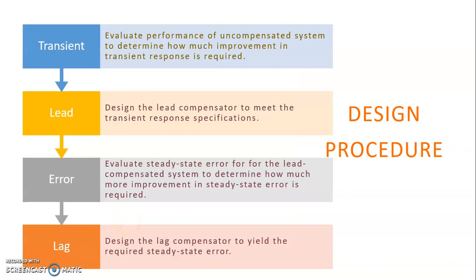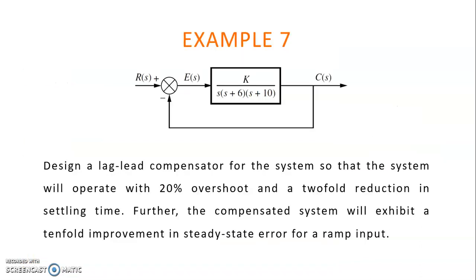The design procedure is based on these steps. The first step is to evaluate the performance of the uncompensated system to determine how much improvement in transient response is required. Next, we design the lead compensator to meet the transient response specifications. Then, we evaluate the steady state error for the lead compensated system to determine how much more improvement is required. Finally, we design the lag compensator to meet the required steady state error.